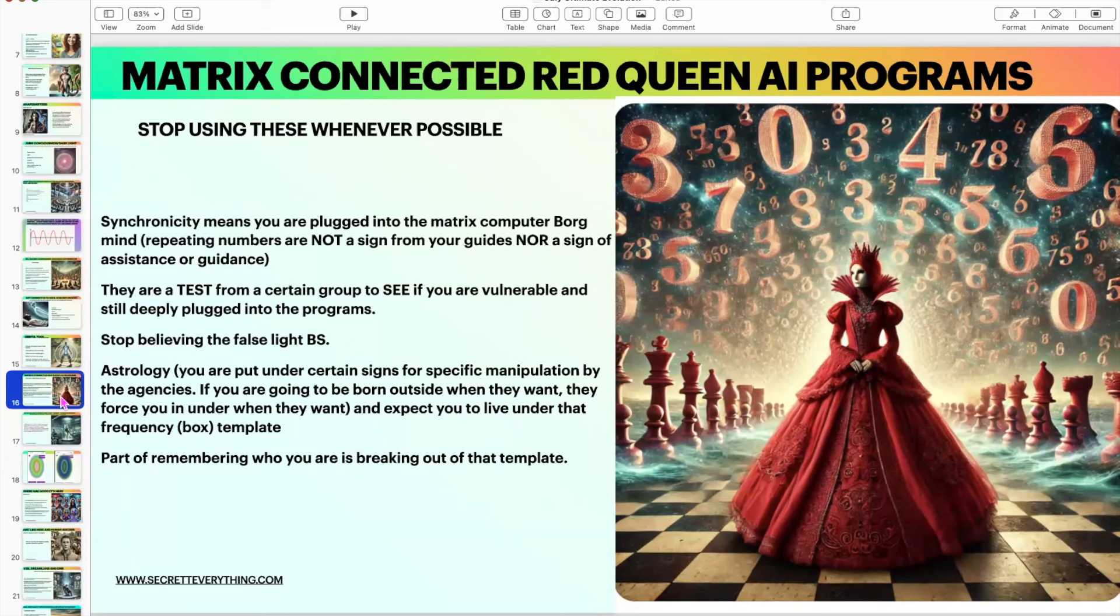You're not—it's not synchronicity. There's no such thing as synchronicity in the matrix. Everything's a program, everything's a script. There are no accidents. The only thing that's not created or run by the red queen AI is when you are in the now moment and you are in 100% control—notice the 100% control—in a clear avatar with no other beings inside of you creating. And that's the goal that you should want to be.